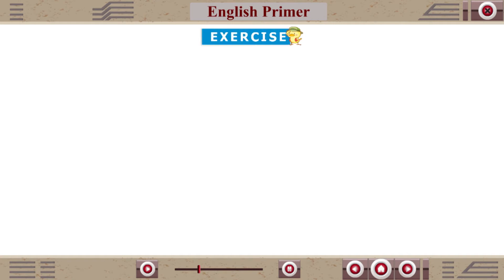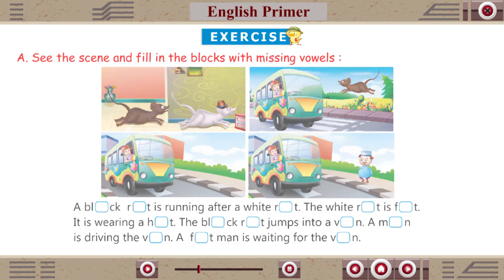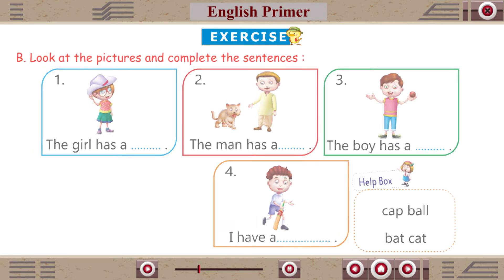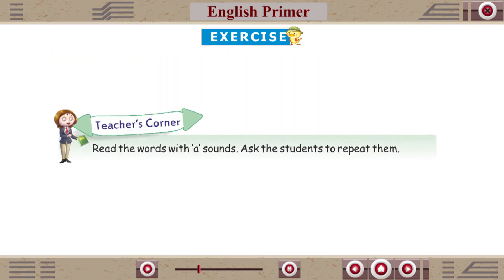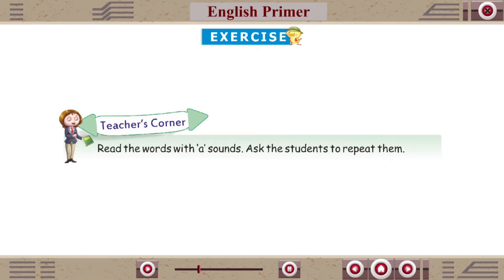Exercise A: See the scene and fill in the blocks with missing vowels. Exercise B: Look at the pictures and complete the sentences. Teacher's Corner: Read the words with A sounds. Ask the students to repeat them.